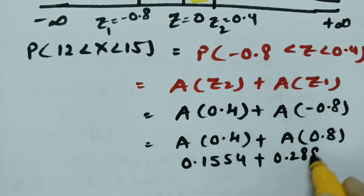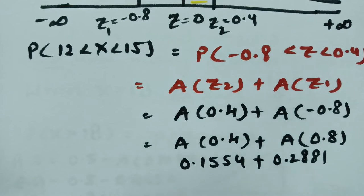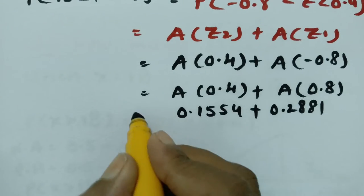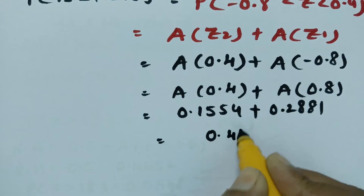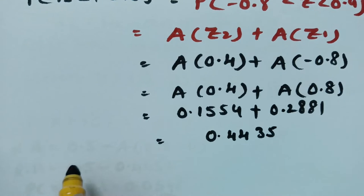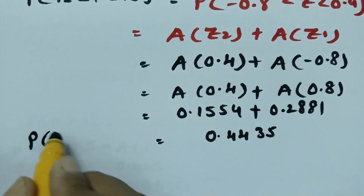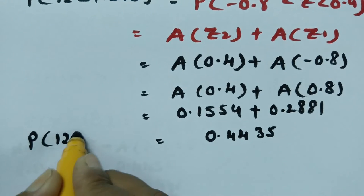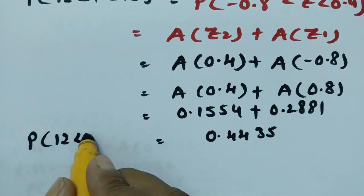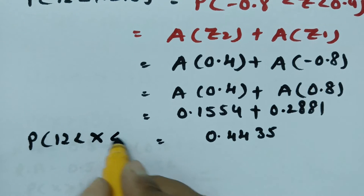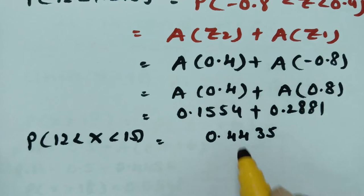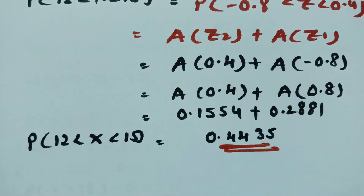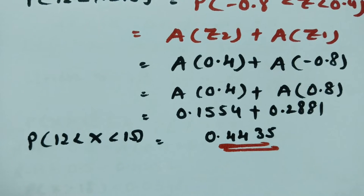Adding the two areas: 0.1554 + 0.2881 = 0.4435. Therefore, P(12 < x < 15) = 0.4435.